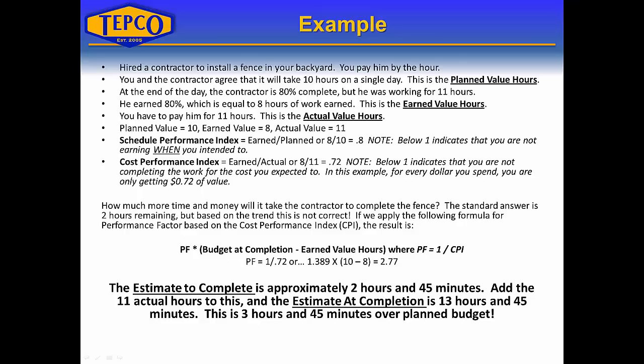So the planned value equals 10, the earned value equals 8, and the actual value equals 11. The schedule performance index (SPI) is earned divided by planned — in this case 8 divided by 10 equals 0.8. Anything below 1 indicates you are not earning when you intended to. The cost performance index (CPI) is earned divided by actual — 8 divided by 11 equals 0.72. Below 1 means you are not completing the work for the costs you expected, so for every dollar spent, we're only getting 0.72 of value.